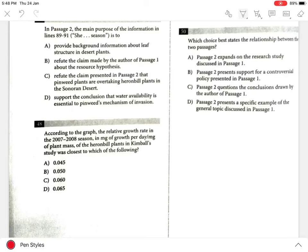Question 50: The best answer is D because Passage 1 presents the study of plant invasion in general, discussing how native species have been replaced by non-native species. And Passage 2 gives an example of a particular experiment conducted by Sara Kimball, also discussing how the native species Harenbill plants have been replaced by the non-native species pinweed plants.